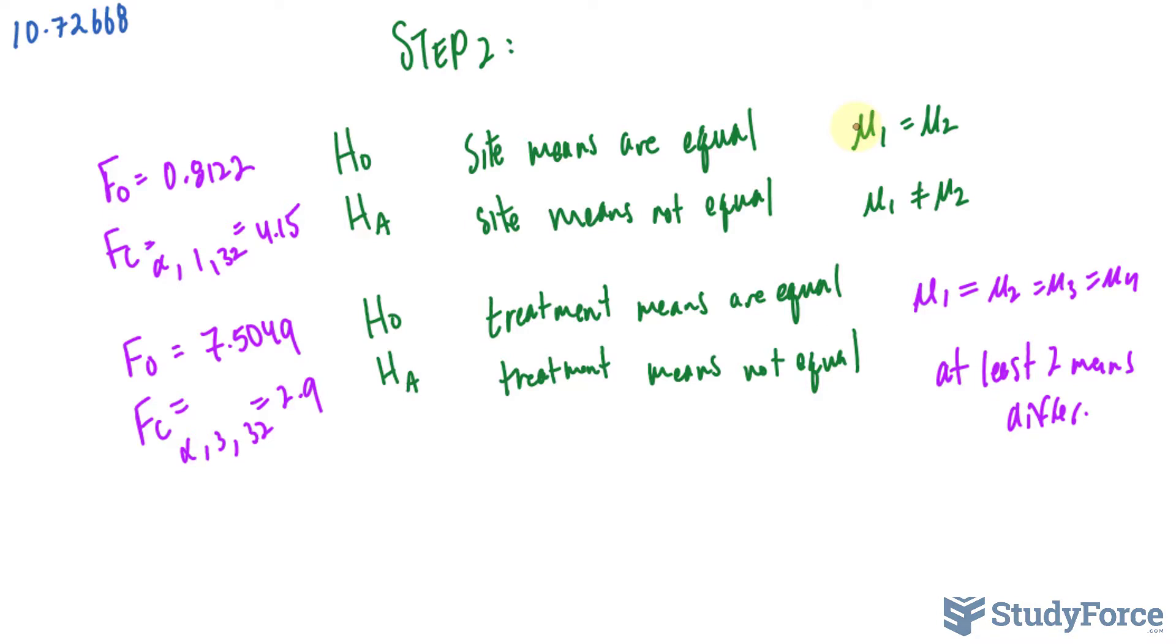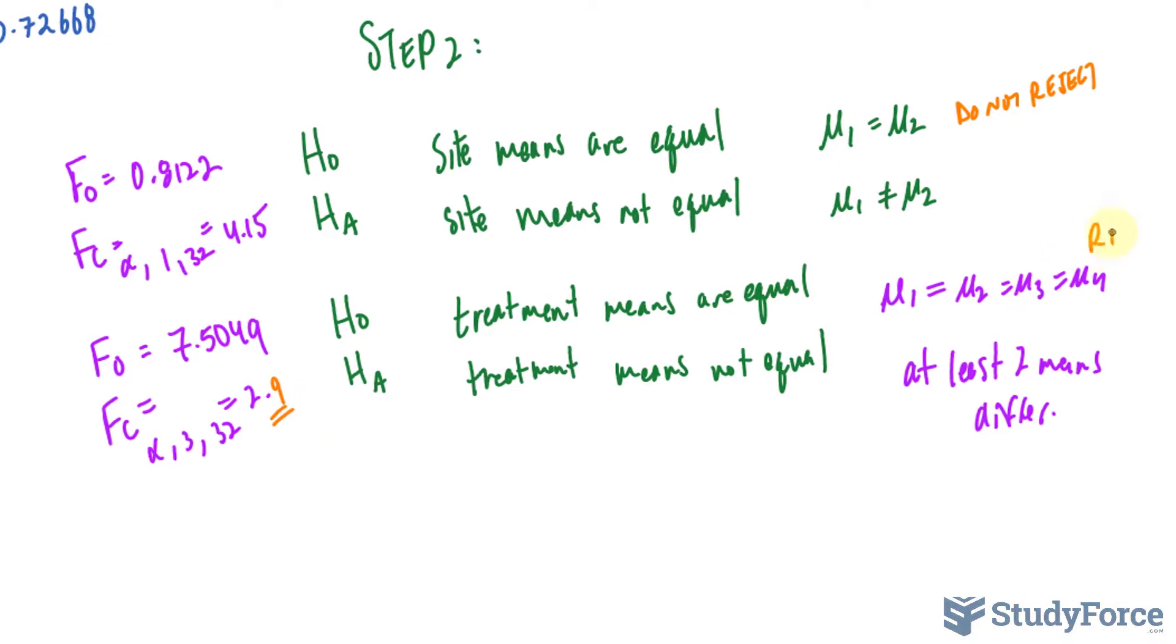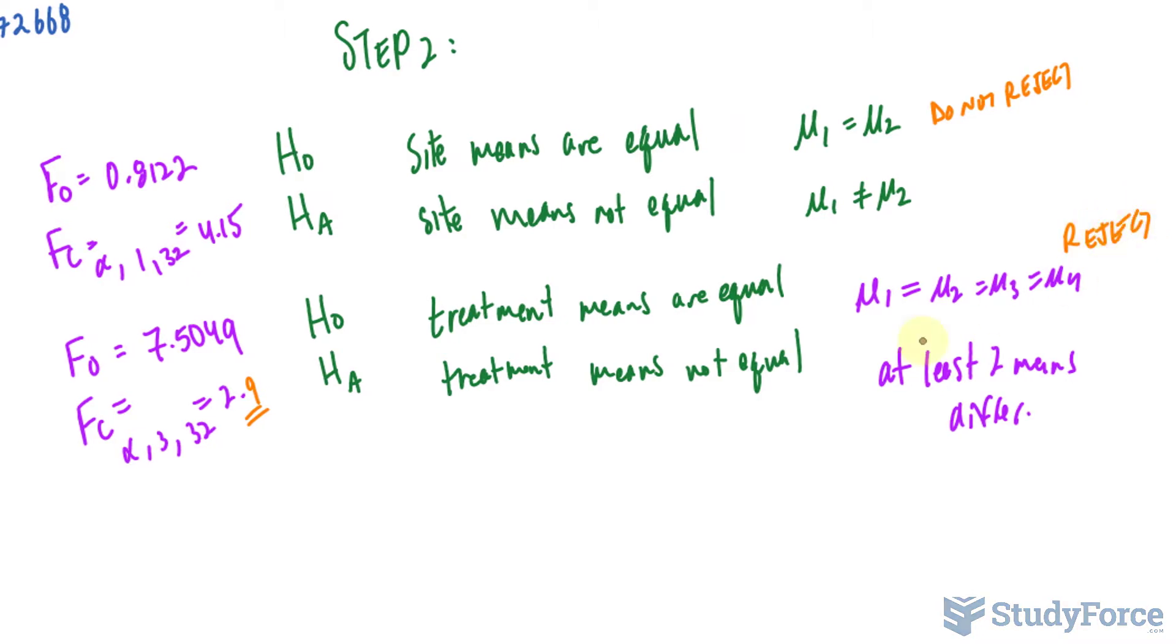In other words, we have insufficient evidence to say that the means are not equal for the site. I'll write down do not reject that. Here we have an F observed of 7.5 and it's greater than 2.9. Because it's greater, then we have enough evidence to reject the null. So we will reject that in favor of this hypothesis that at least 2 means differ. The treatment means are not equal.